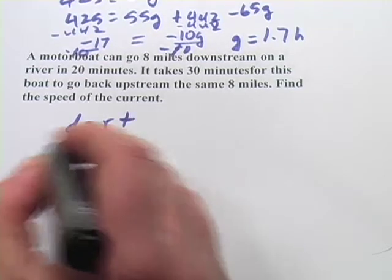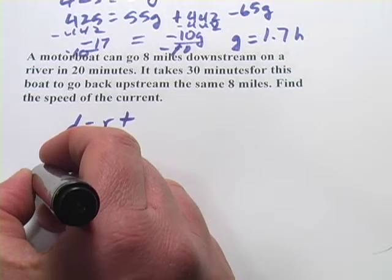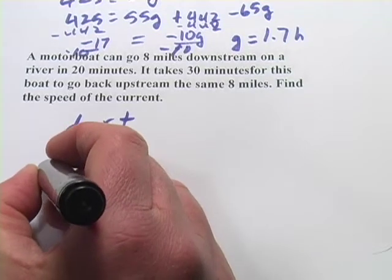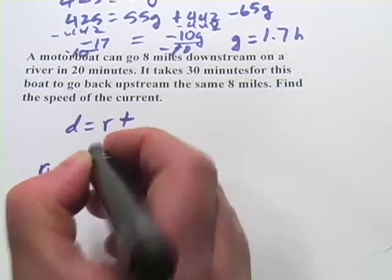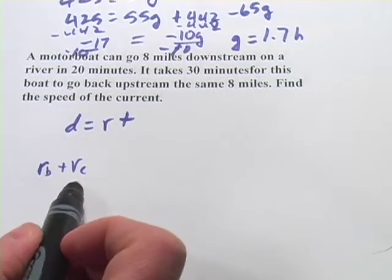The rate is this, when they're going downstream with the current, the rate equals the speed of the boat, the rate of the boat plus the added rate of the current. So we'll call that R sub B and R sub C.